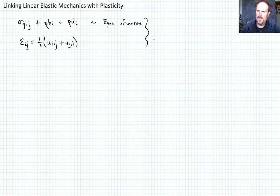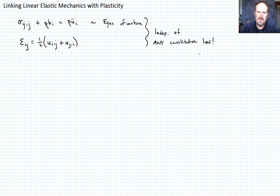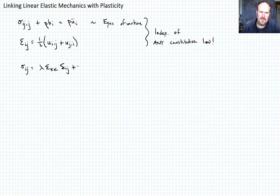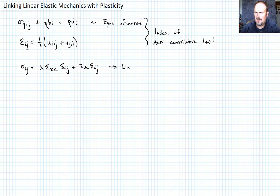These two equations were independent of any constitutive law. The only thing required is small strain, at least in order to represent the strain tensor that way. And then we talked about the elastic constitutive law, or Hooke's law, for linear elastic materials: sigma_ij equals lambda epsilon_kk delta_ij plus 2 mu times epsilon_ij. That's our linear elastic constitutive law.